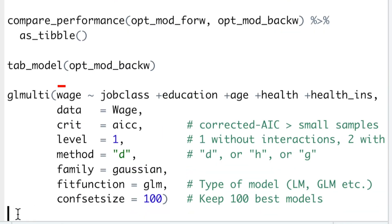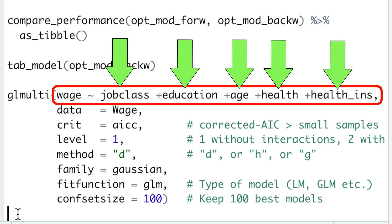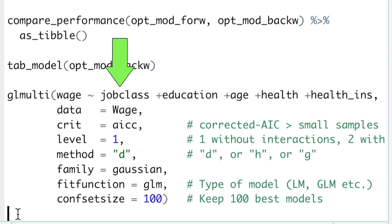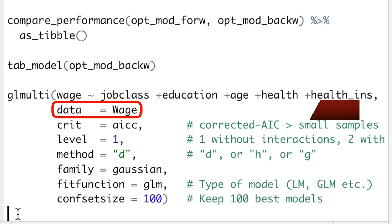First, you have the formula, with the dependent variable on the left side of the tilde, and all possible predictors on the right side of the tilde. For this example, we'll study the salary of 3000 American workers with 5 predictors: job class, education, age, health, and health insurance. Then, we'll tell R which dataset to use. In this case, we'll use the wage dataset from ISLR package.